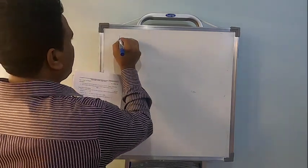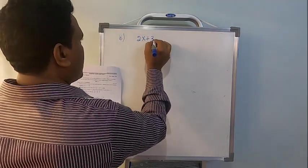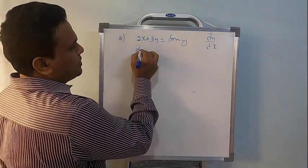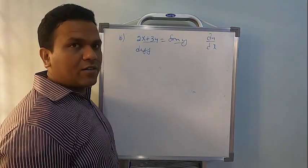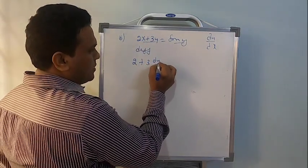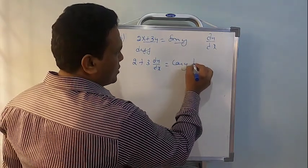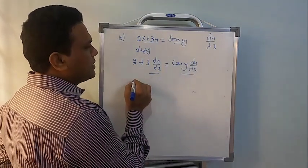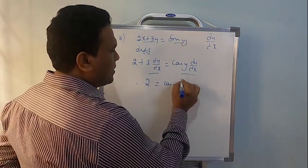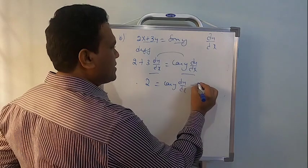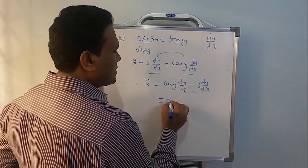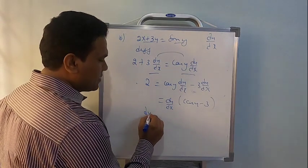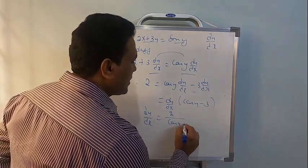Problem number 16 in 2017 June: if 2x + 3y = siny, find dy/dx. Implicit differentiation: 2 + 3·(dy/dx) = cosy·(dy/dx). Collect dy/dx: 2 = cosy·(dy/dx) − 3·(dy/dx) = (cosy − 3)·(dy/dx). Therefore dy/dx = 2/(cosy − 3).